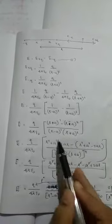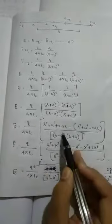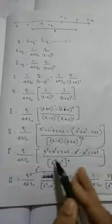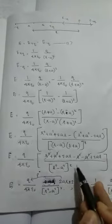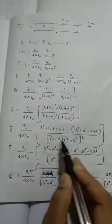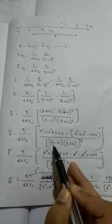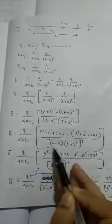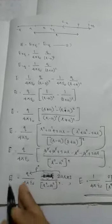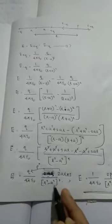This simplifies so that the denominator becomes (r squared minus a squared) all squared. The numerator, expanding (r plus a) squared minus (r minus a) squared, gives 4ar. So E equals q by 4 pi epsilon-0 times 4ar divided by (r squared minus a squared) squared, which simplifies to 2 times 2ar, giving E equals q by 4 pi epsilon-0 times 2 into 2ar divided by (r squared minus a squared) squared.